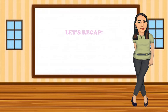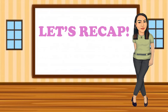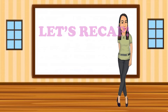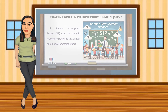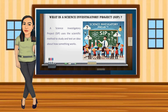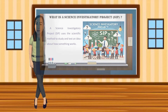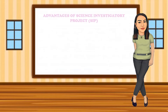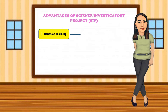Let's recap. Let's take a moment to recap what we've learned today. A science investigatory project uses the scientific method to study and test an idea about how something works. Science investigatory projects offer many advantages. First, they promote hands-on learning — you learn by doing things yourself rather than just reading from a book.